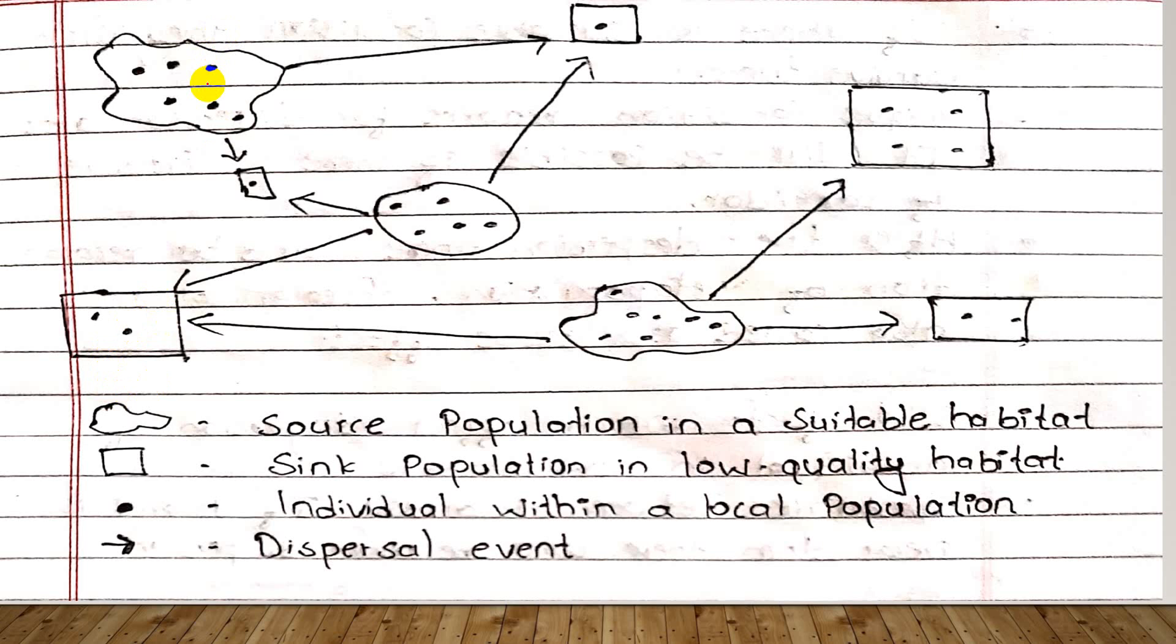Source is a high quality habitat that on average allows the population to increase, while sink is low quality habitat. Here, black dots represent individuals within a local population, and these arrows show dispersal events - that is, corridors.